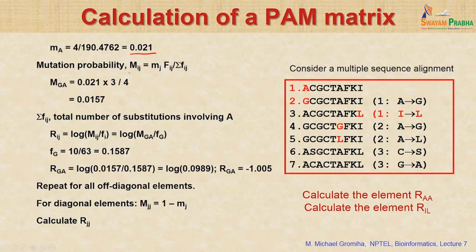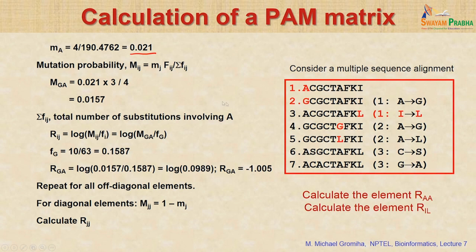The mutation probability m_ij is given as m_j multiplied by f_ij divided by sigma f_ij. Here, m_ga equals 0.021 multiplied by f_ga (which is 3), divided by sigma f_ij (which is 4). So m_ga equals 0.0157. Here f_ij is the total number of substitutions involving alanine, which is 4.